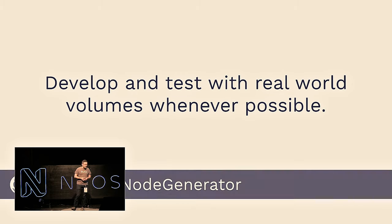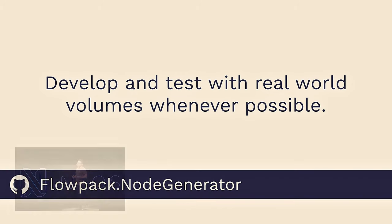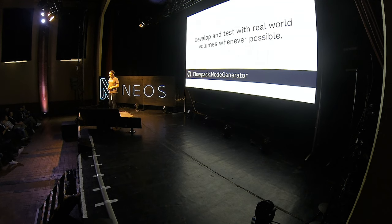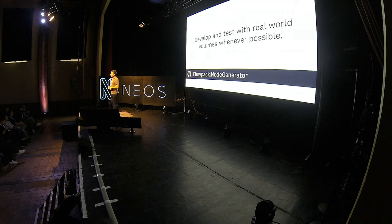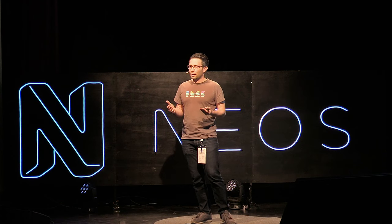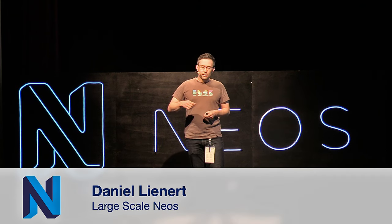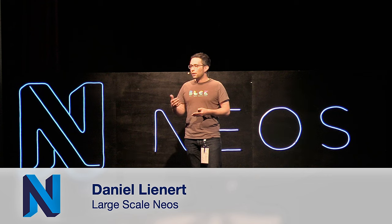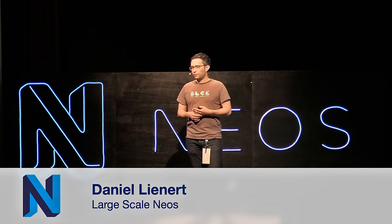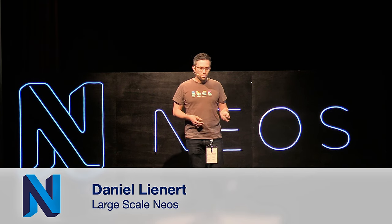In this early phase, there is a package — the Flowpack node generator — that can be configured to generate nodes that fit your project. With generated documents, it's much easier to get a feeling about the estimated volumes and to develop fitting code for it. And if you are migrating a legacy project and want to migrate legacy data, it's a good idea to write the importers for that legacy data very early — as soon as you have defined your models or node types, start implementing the importers.